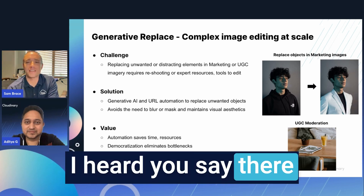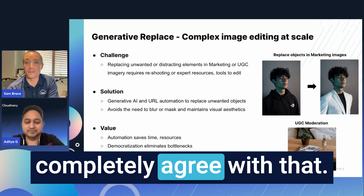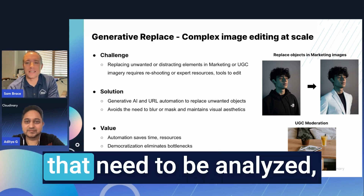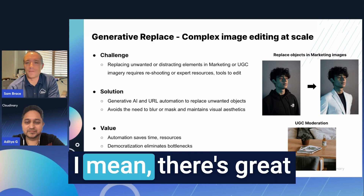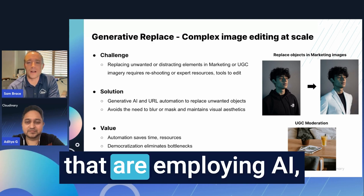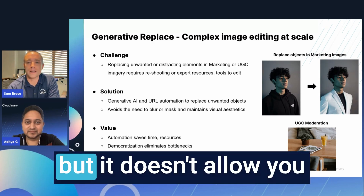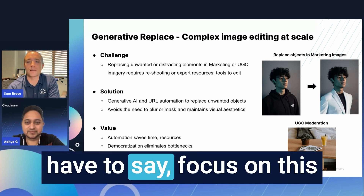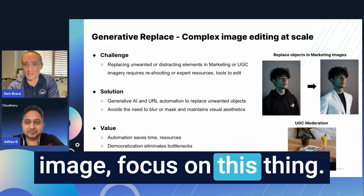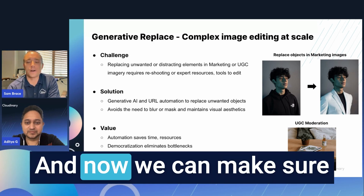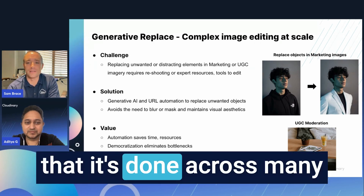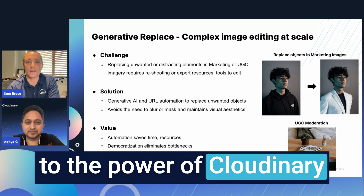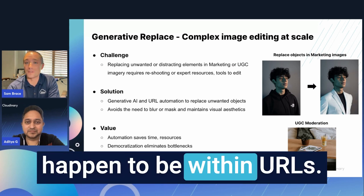The key word there is scalability. If you have dozens of assets that need to be analyzed, there are great creative tools out there employing AI, but they don't allow you to do it any other way than manually — you have to focus on one image at a time. Now we can make sure that changes are done across many assets all at once, thanks to the power of Cloudinary and transformations that happen to be within URLs.